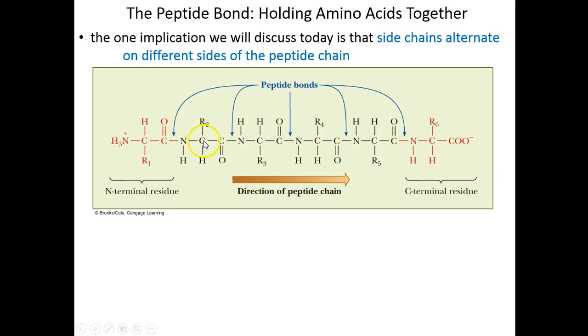We have the amino group, the alpha carbon, the carboxy group, peptide bond. The amino group, alpha carbon, carboxy group, peptide bond. Down the line we go. Here's our third amino acid, fourth, fifth, and sixth amino acid ending with a free carboxyl group.